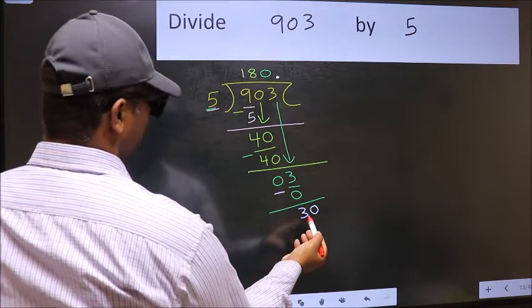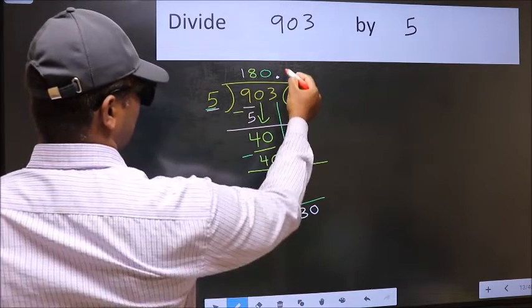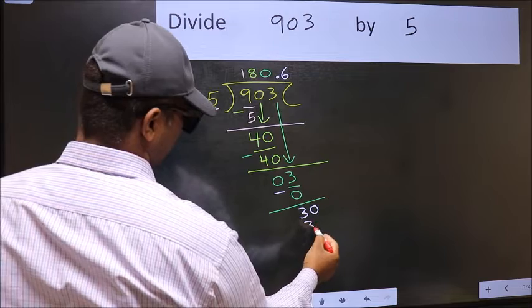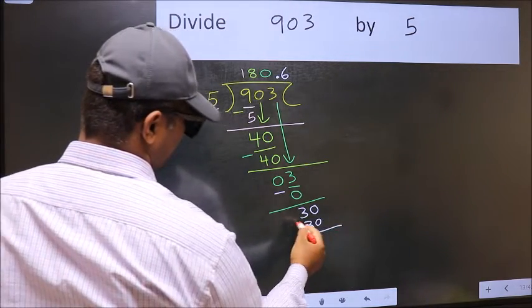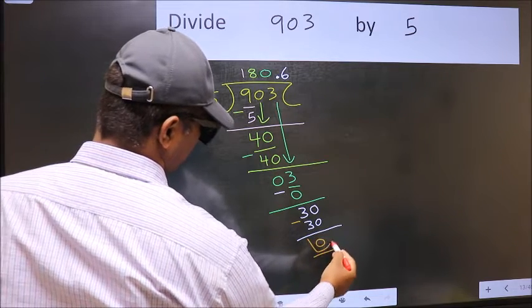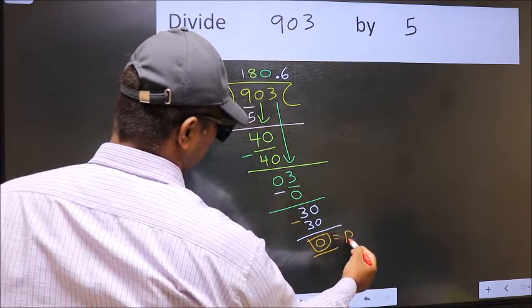So 30. When do we get 30 in 5 table? 5 times 6, 30. Now you should subtract. 30 minus 30, 0.